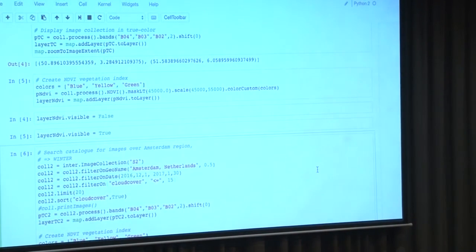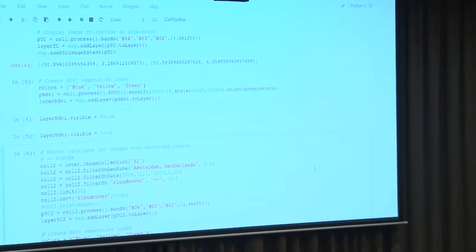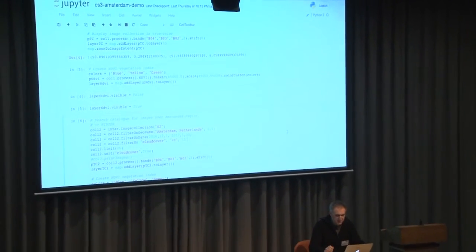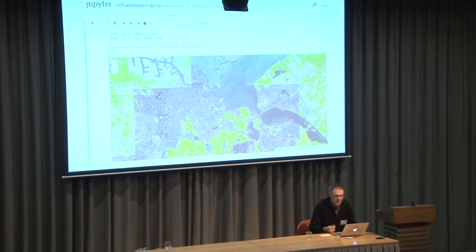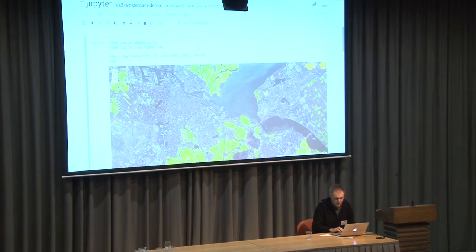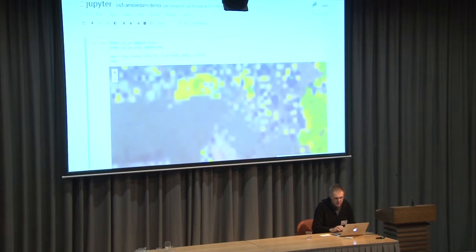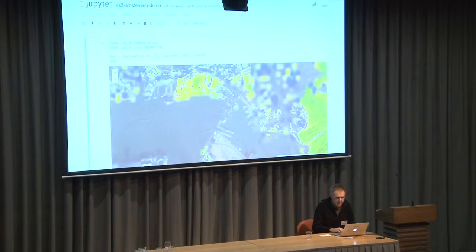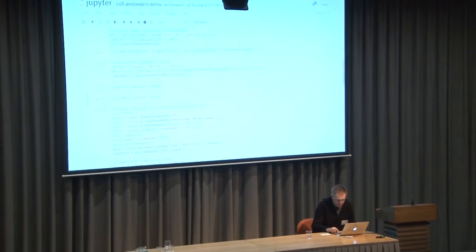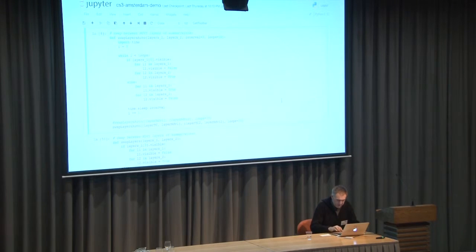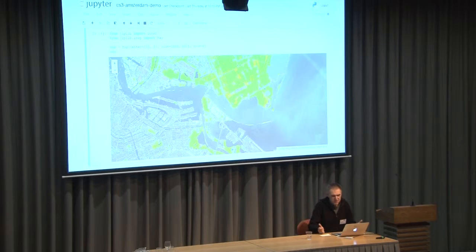Now to make a comparison, you can do the same kind of request but with a different date — this time winter, from late last year to the beginning of this year. I launch that in addition. You see it first adds the satellite image to the map, then adds the vegetation index of that date. You can always zoom in and zoom out and everything is calculated on the fly and sent to the client. You can swap the images to see the difference between summer and winter.